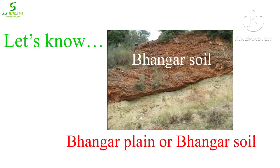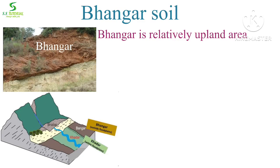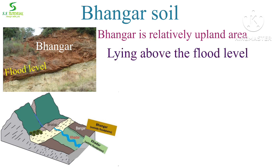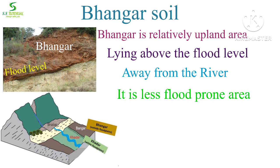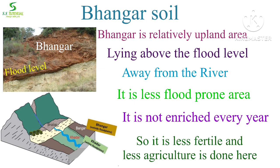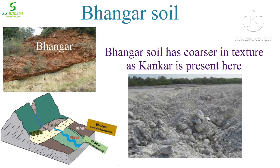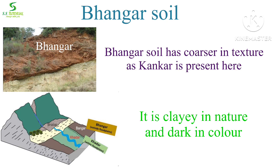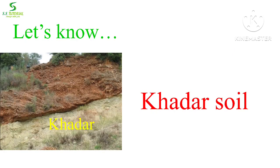Khadar is new alluvial soil and Bhangar is old alluvial soil; both soils are rich in impure calcium carbonate. Old alluvial soil or Bhangar is a relatively upland area lying above the flood level, away from the river. So it is a less flood-prone area. Because of this, it is not enriched every year — it is less fertile, and less agriculture is done here. Bhangar soil is coarser in texture as kankar is present, it is clay in nature and dark in color.